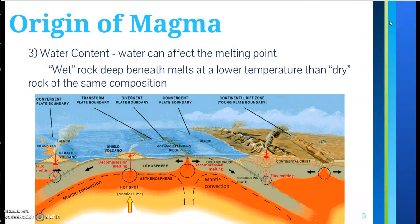Finally, water content. Water can affect the melting point. A wet rock found deep beneath the earth's surface will melt at a lower temperature than dry rock of the same composition. That has to do with water's ability to hold and retain heat.